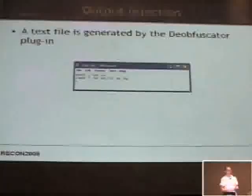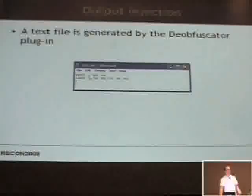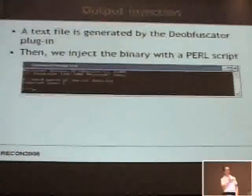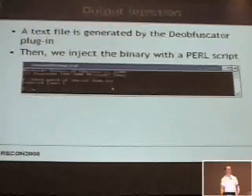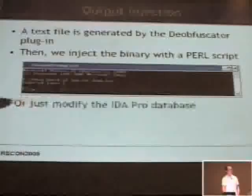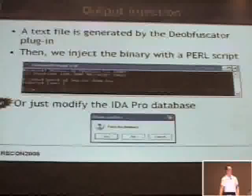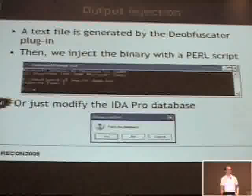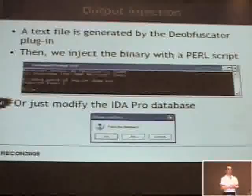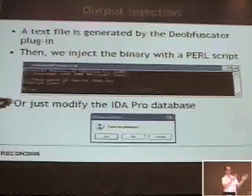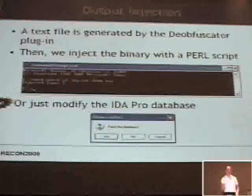The deobfuscator outputs a text file in the format of an offset address and file offset, then an integer number of bytes we're going to inject, and then just the bytes to inject on each line. We take our binary injector Perl script — it's pretty simple — and give it the arguments of the text file and then the binary, or a copy of the binary if you want to keep your original for dynamic analysis or in case something is checksummed. The new functionality we've added is to just modify the IDA Pro database in place, which makes it a lot faster to run the deobfuscator iteratively — you just patch, run it again, patch, run, patch.